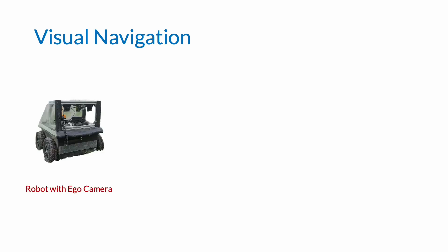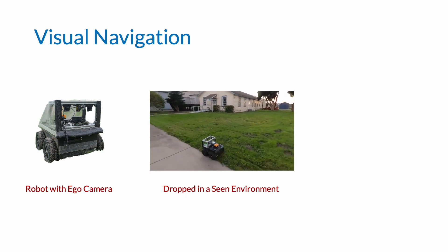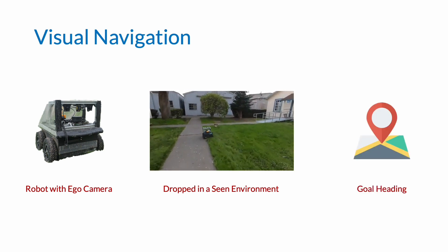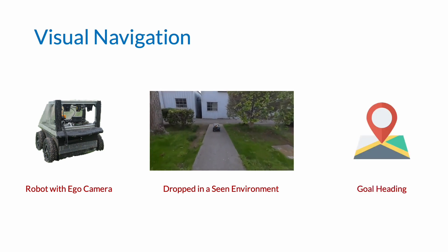In this paper, we study the problem of visual navigation where a robot with an egocentric RGB camera is dropped in a previously seen environment to seek a goal denoted by a GPS location without colliding with its surroundings.